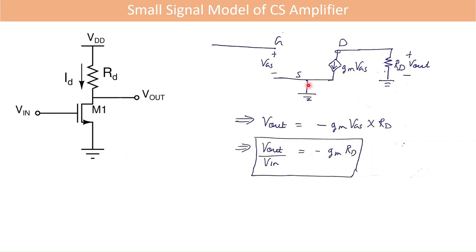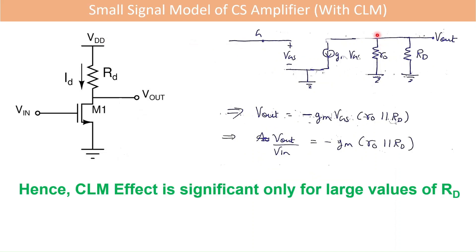The small signal model is easy to draw — we have VGS between gate and source, and the drain is connected to ground through RD because VDD is a DC source, and in AC analysis DC sources are set to zero. With channel length modulation included, we add the output resistance RO of the MOSFET between drain and ground, so VOUT is now across the parallel combination of RO and RD.